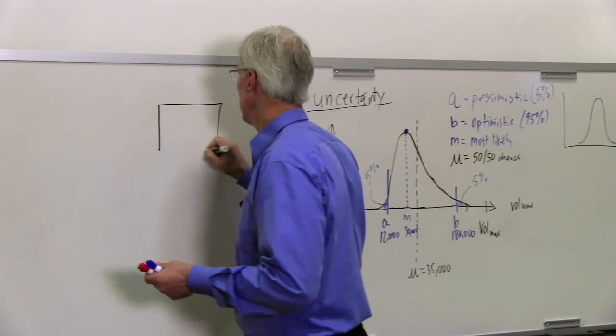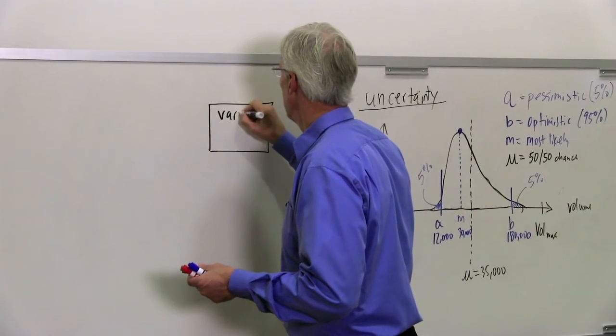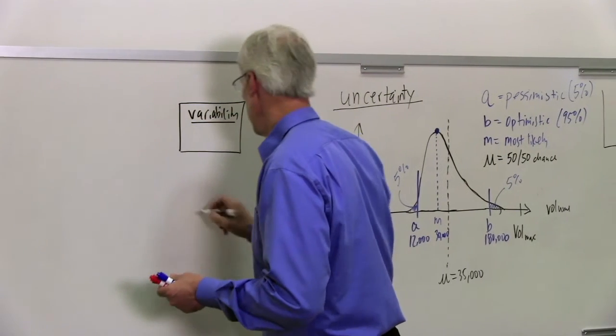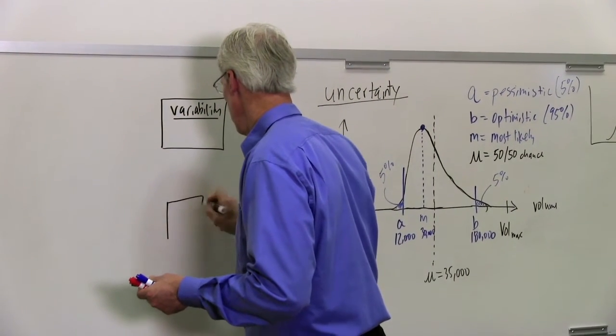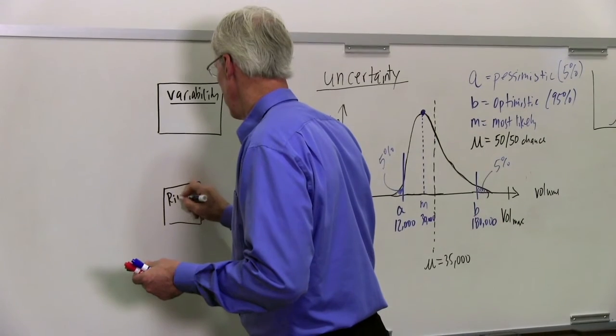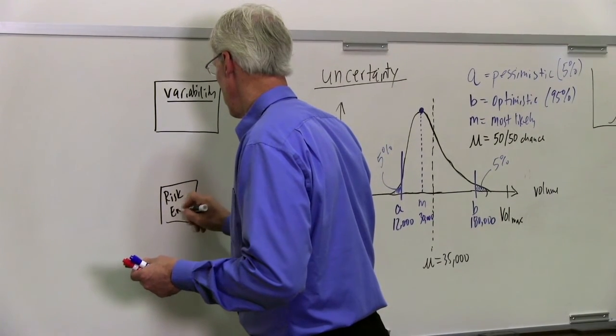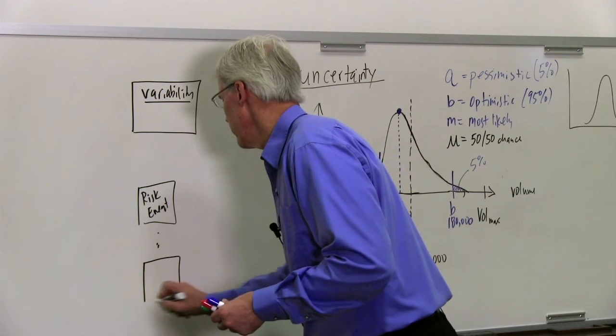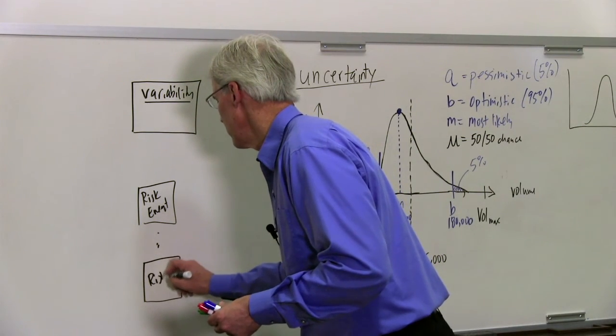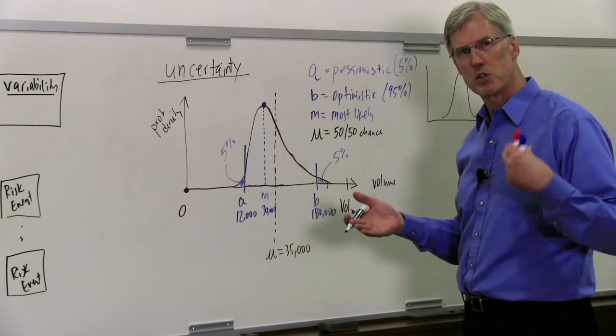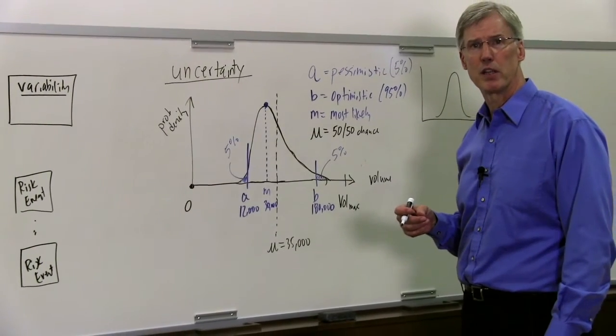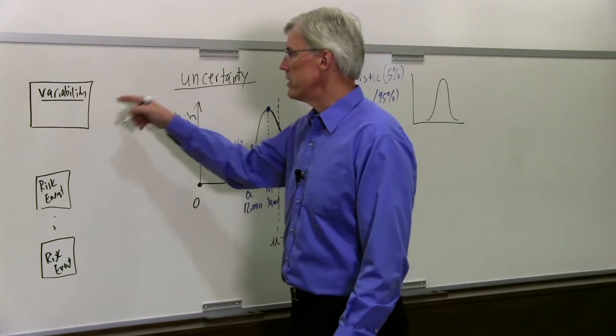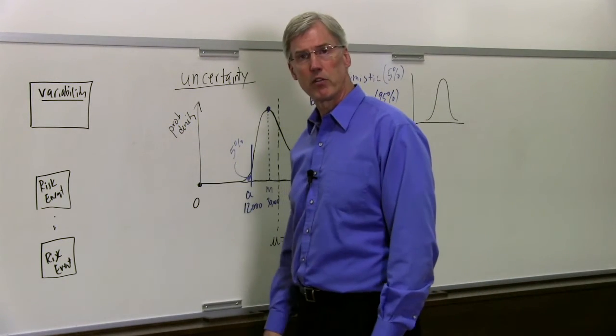What we do is we actually divide this into two distinct concepts. We say there are two things that give rise here. One thing we're going to call variability. And another thing we're going to call a risk event. There may be multiple risk events. There may be multiple variabilities. These are the things that give rise to this. And I'd like to describe a little bit of it right now. And then let you see the video from the oil and gas industry to understand this better. But let's talk about the difference between variability and risk event.